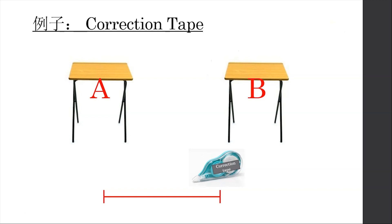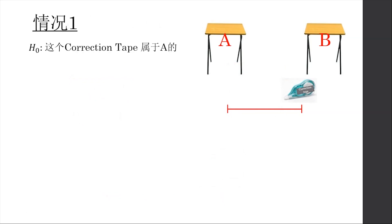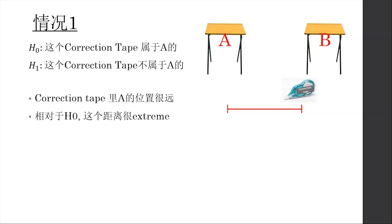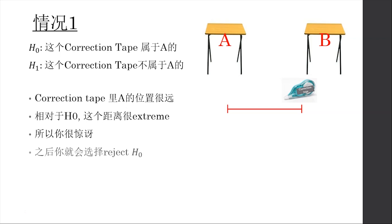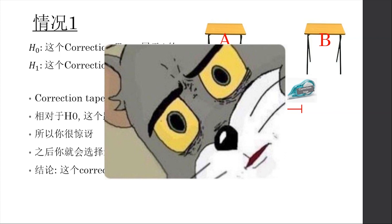If we look at this from a hypothesis testing perspective: first, we have two assumptions. The first assumption — our original hypothesis H0 — is that the correction tape belongs to A. The second hypothesis is the alternative, opposing the first: the correction tape does not belong to A. In the first case, if the correction tape is that far from A's position, relative to H0 that distance is very extreme, so you'd be very surprised. You would choose to reject H0 and conclude that the correction tape does not belong to A. But does that mean it's definitely true that it doesn't belong to A? The answer is: we don't know, because we can never know the truth.